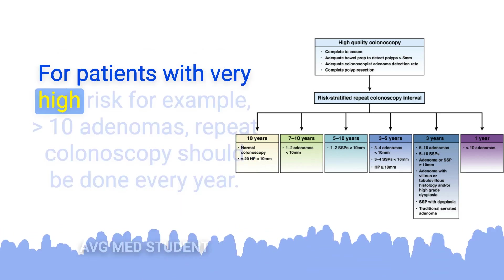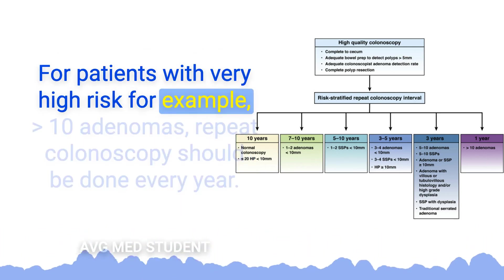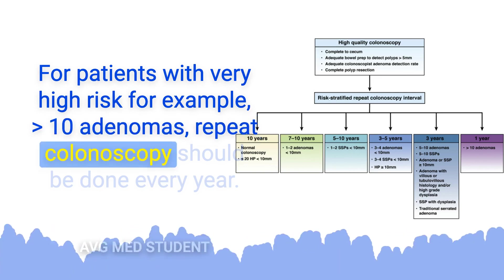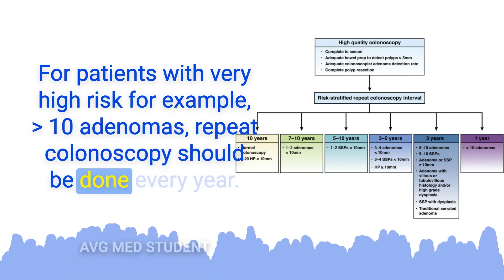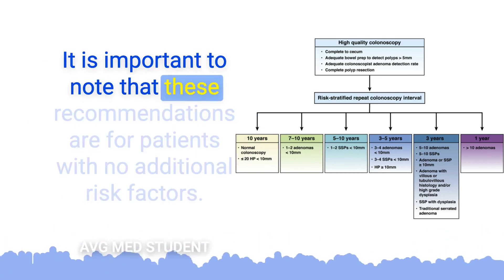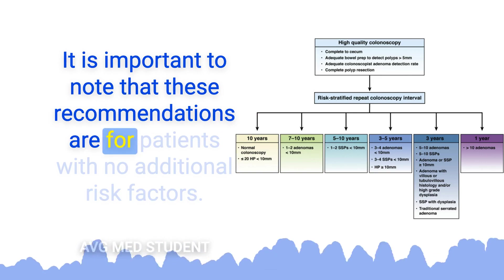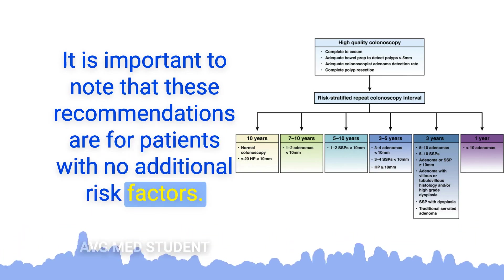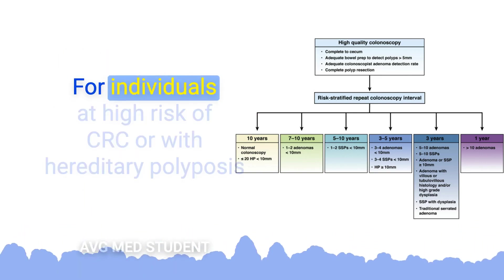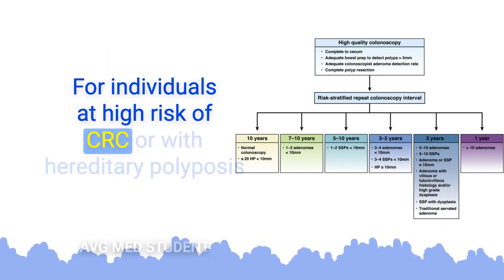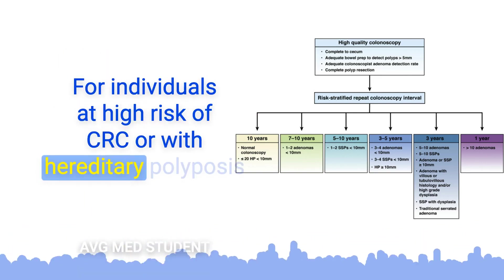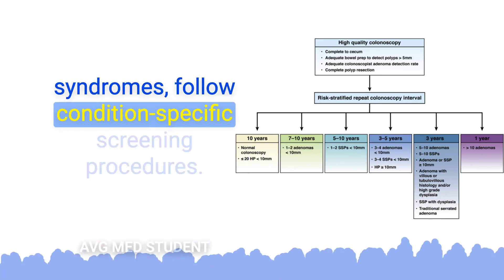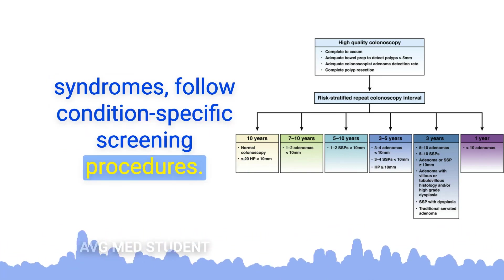For patients with very high risk — for example, greater than 10 adenomas — repeat colonoscopy should be done every year. It is important to note that these recommendations are for patients with no additional risk factors. For individuals at high risk of CRC or with hereditary polyposis syndromes, follow condition-specific screening procedures.